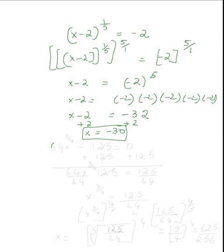Let's try a last problem. Let's say I have a problem: sixty-four x raised to three-fourths minus one twenty-five equals zero. What do I do in a problem like this? So the first thing is I isolate x. So what do I do for that? I add the one twenty-five on both sides.